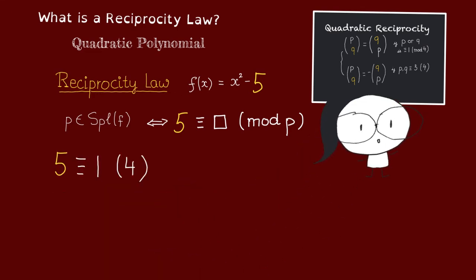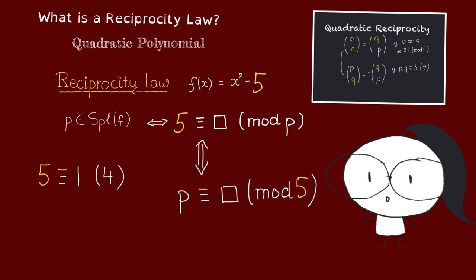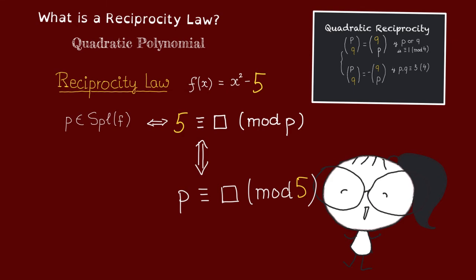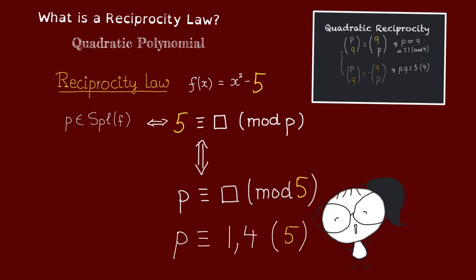So then, by quadratic reciprocity, we have that 5 is a square mod p if and only if p is a square mod 5. Oh, and finding the square mod 5 is so easy. Half of the elements in Z mod 5 Z will be square, and so they are gonna be 1 and 4.